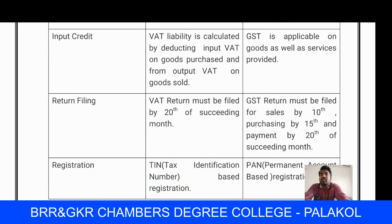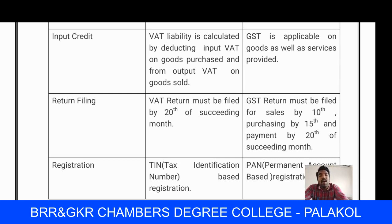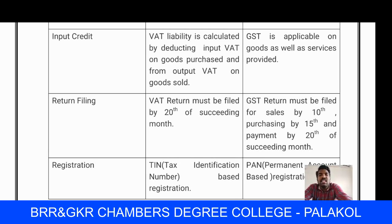Next, input credit. VAT liability is calculated by deducting input VAT on goods purchased from output VAT on goods sold. The formula is: output tax minus input tax equals tax payable amount. GST input credit is applicable on goods as well as services provided.